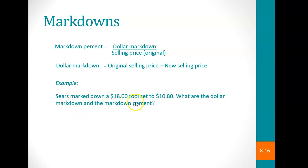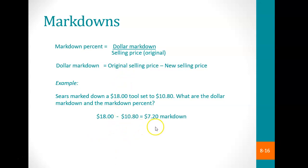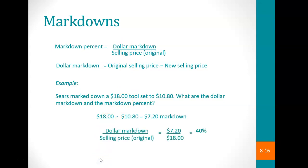For example, Sears marked down an $18 item to $10.80. The dollar markdown is the original sale price minus the new sale price, so the markdown amount is $7.20. As a percentage, you take the dollar markdown divided by the original price: $7.20 divided by $18.00 shows this item was marked down a total of 40%.